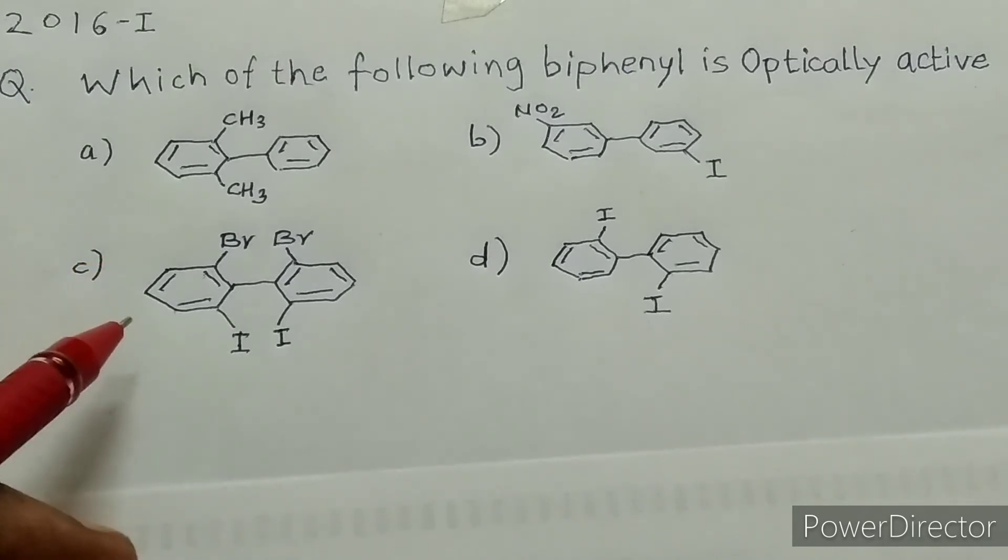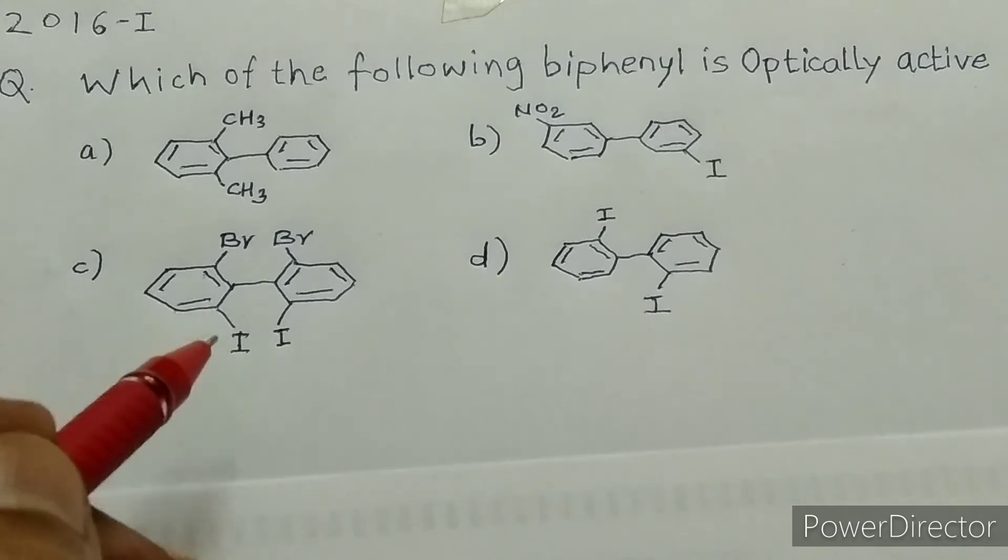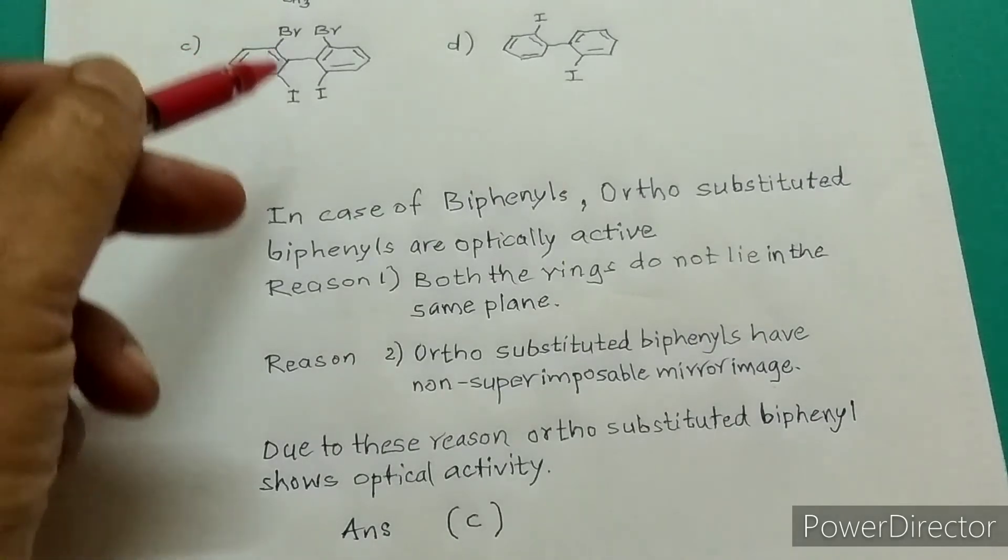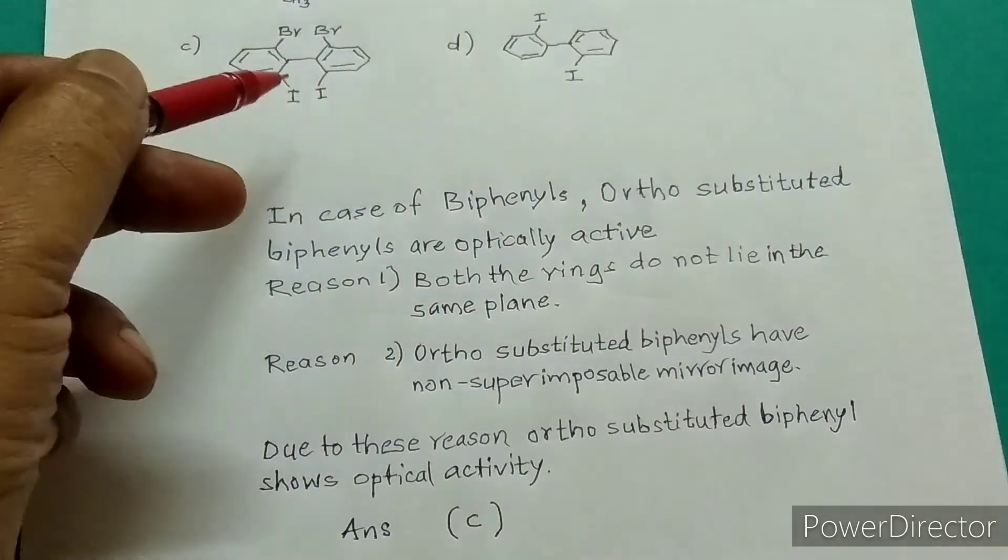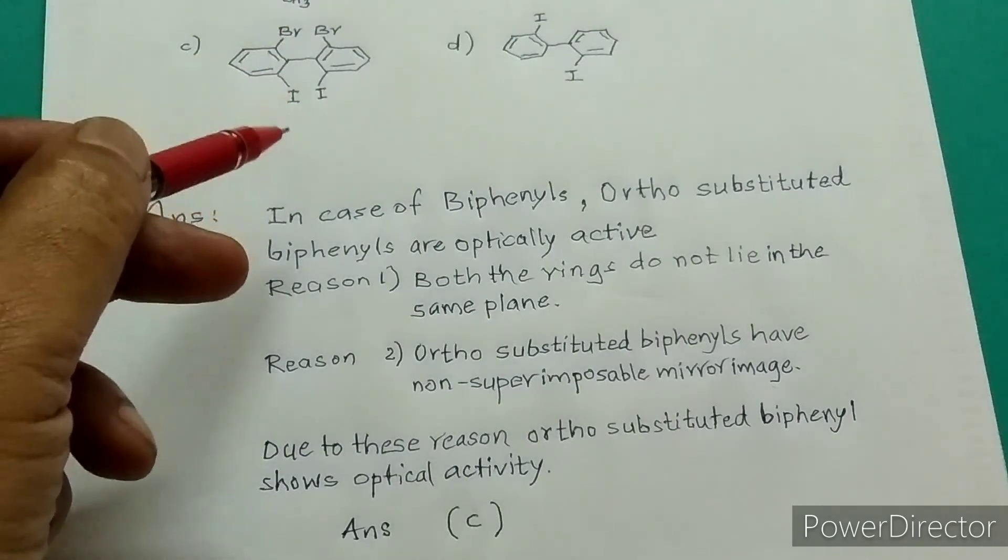Therefore, option C biphenyl exhibits optical activity. Now I'll give you the 30-second trick. Whenever they ask which biphenyl is optically active, you have to look for ortho-substituted biphenyls with bulkier groups present in the ortho positions. This is also